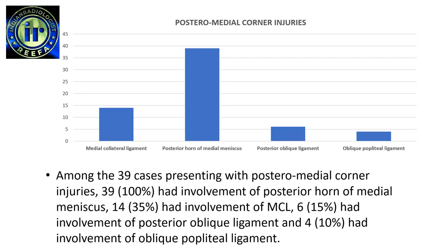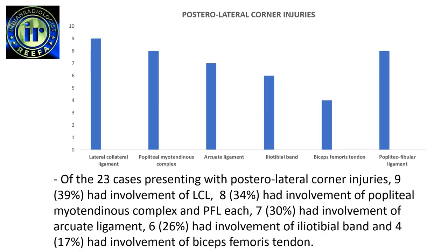Among the 39 cases presenting with posterior medial corner injuries, all of them had involvement of the posterior horn of the medial meniscus. 35% had involvement of the medial collateral ligament, 15% had involvement of the posterior oblique ligament, and 10% had involvement of the oblique popliteal ligament. Of the 23 cases presenting with posterior lateral corner injuries, 39% had involvement of the lateral collateral ligament, 34% had involvement of the popliteal myotendinous complex and the popliteal fibular ligament each, 30% had involvement of the arcuate ligament, 26% had involvement of the iliotibial band, and 17% had involvement of the biceps femoris tendon.